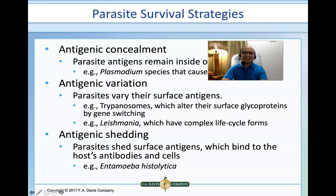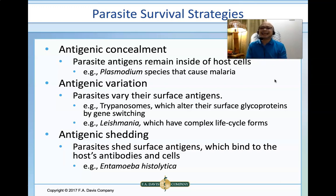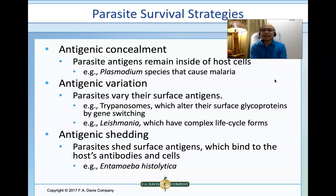There are several strategies utilized by parasites to survive longer inside the host. One of the most common is antigenic concealment, meaning the parasite's antigens remain hidden inside host cells. Plasmodium species that cause malaria is an example — hypnozoites can remain hidden in the liver for a very long period. Some parasites are also capable of antigenic variation, wherein they vary their surface antigens. Trypanosomes, for example, alter their surface glycoproteins through gene switching.